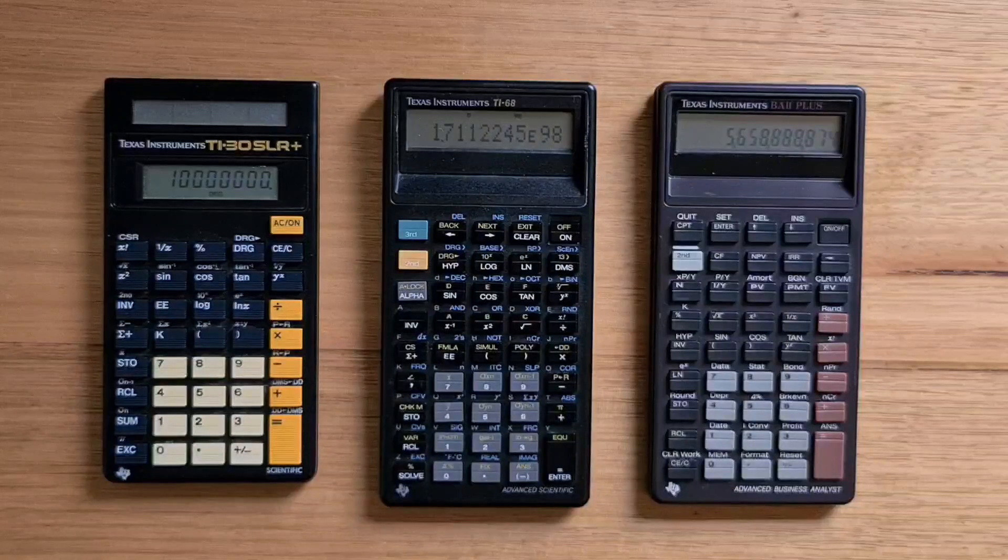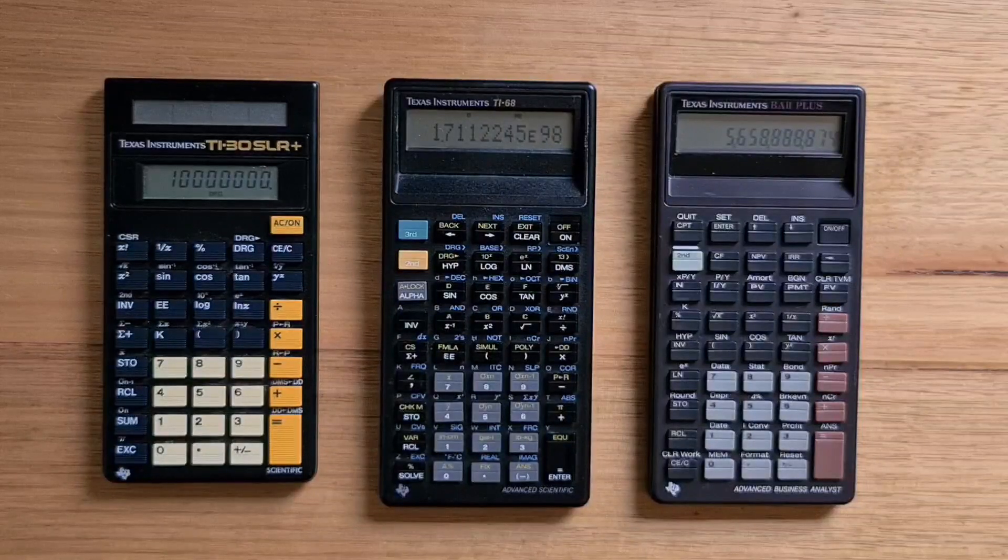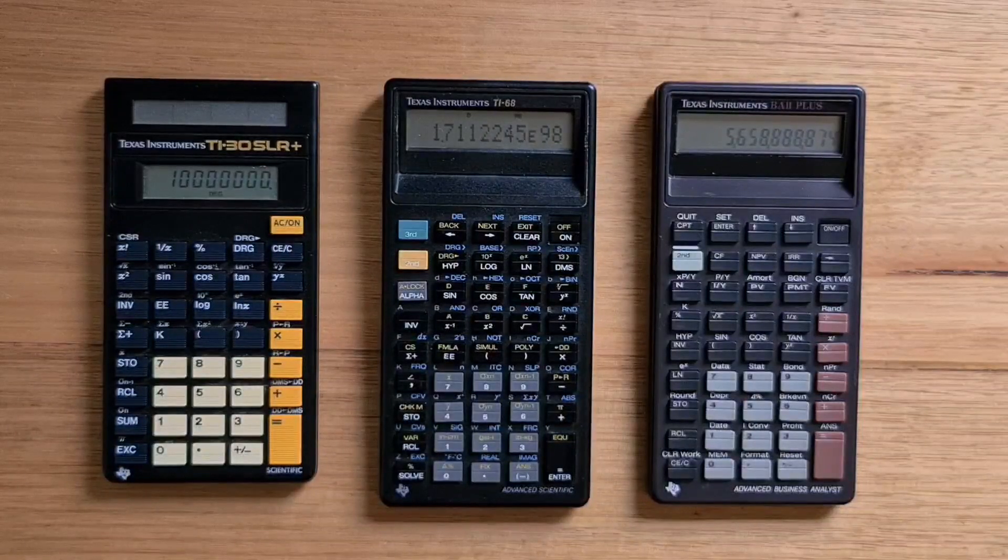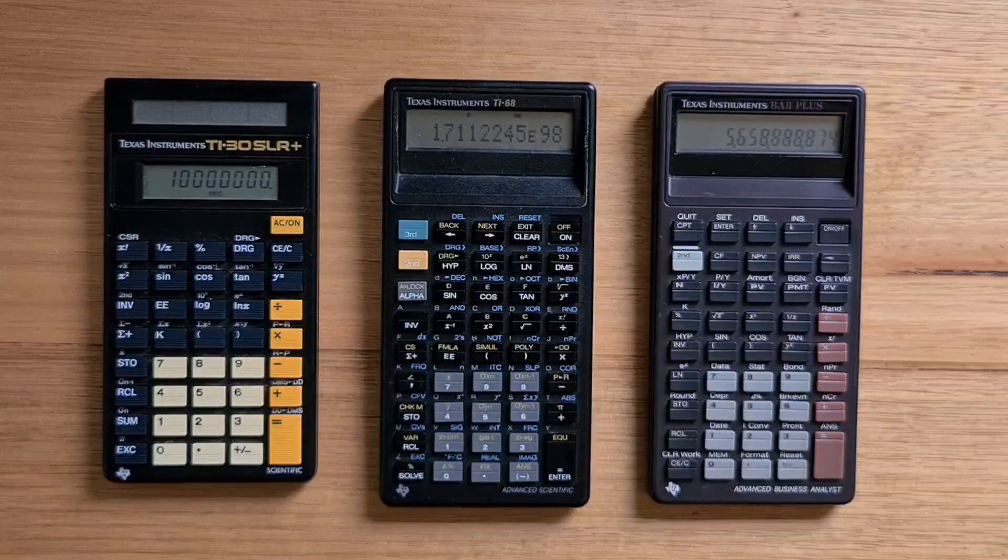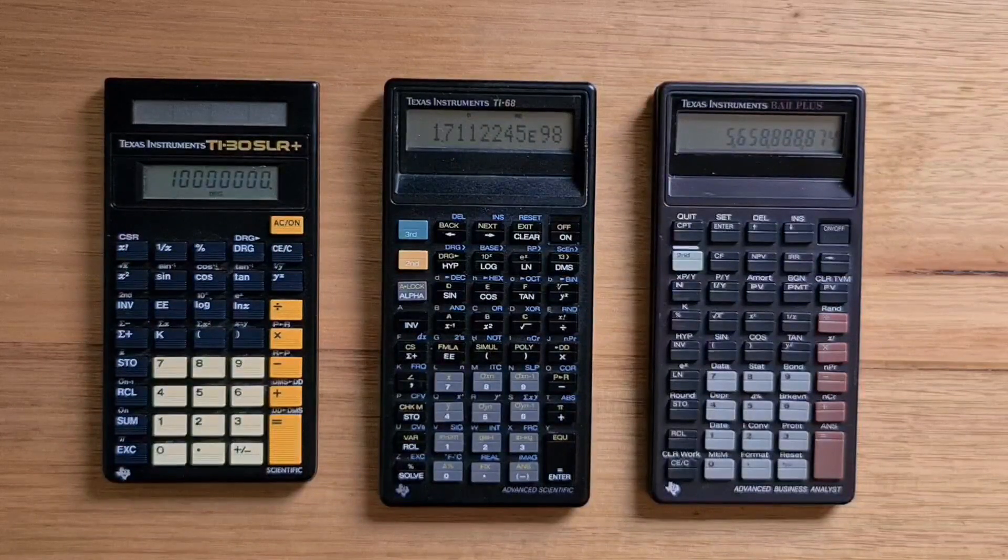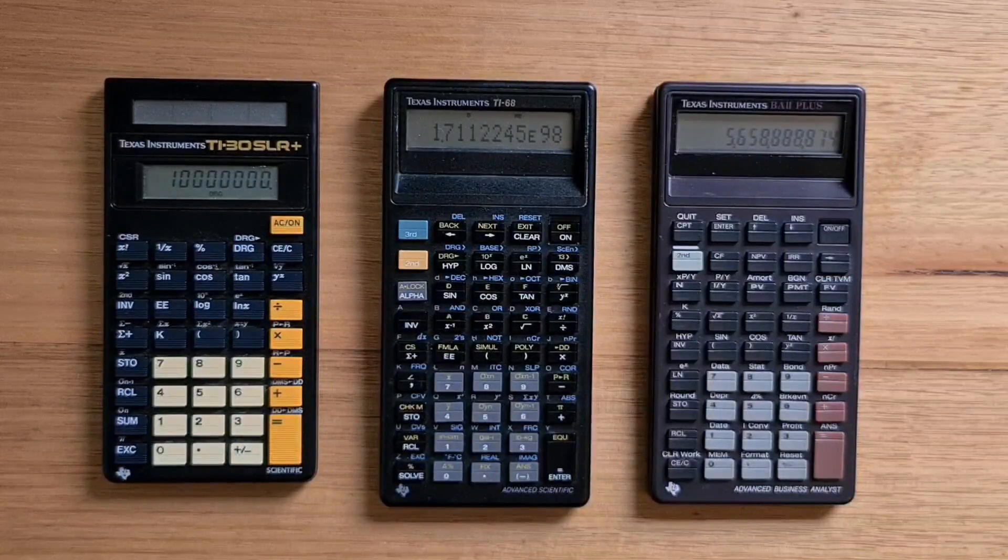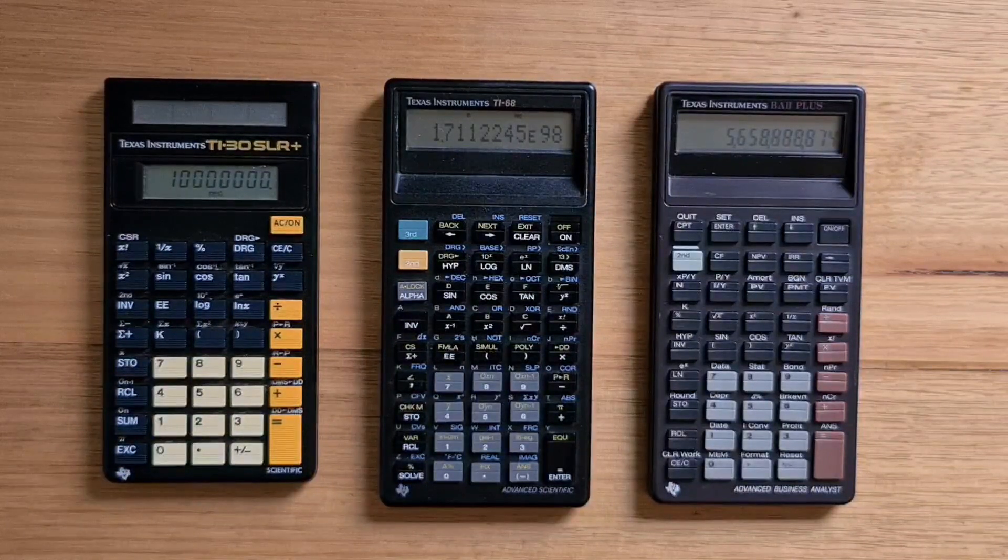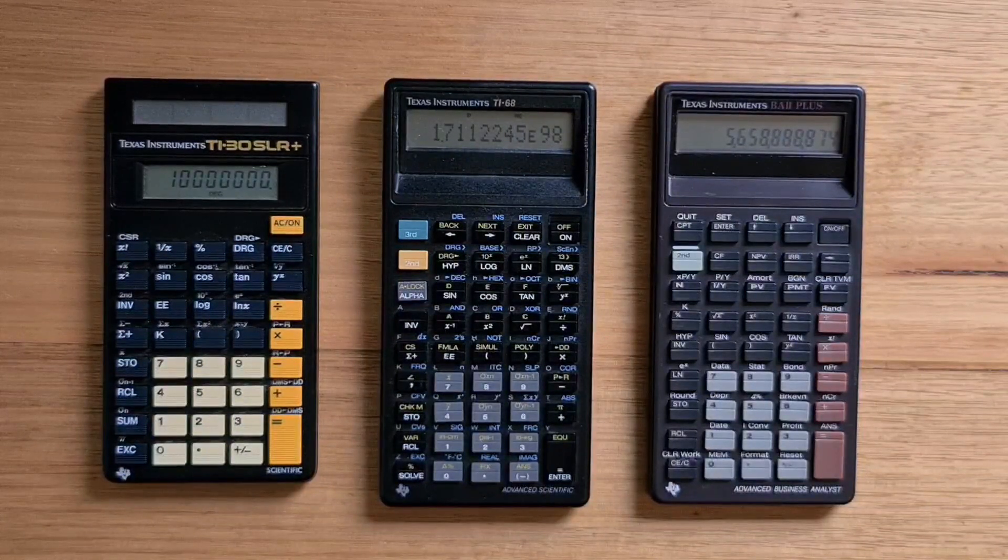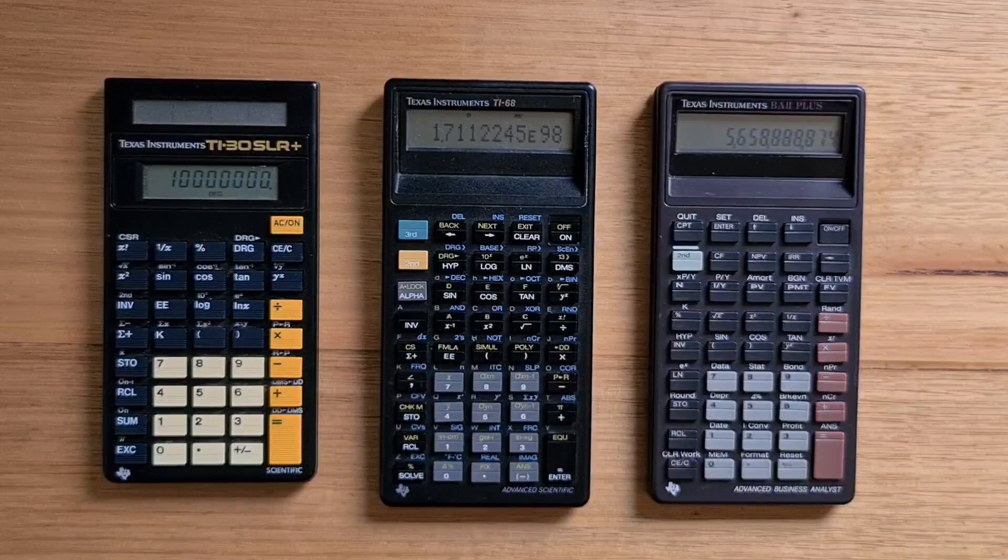This was the era that TI started moving away from its own processes for its calculators. The 68 uses a Toshiba T9948A CPU that has a reasonable amount of RAM for its time, supporting 55 storage registers or 444 formula programming steps.